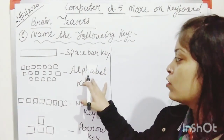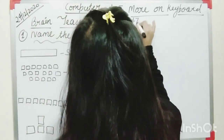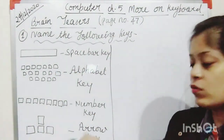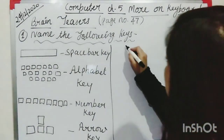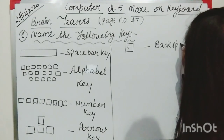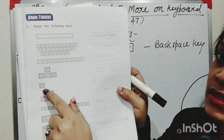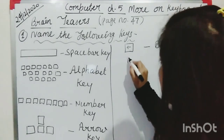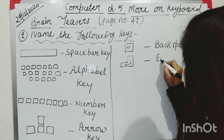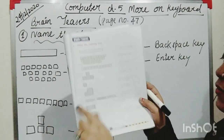So on page number 47: first is Space Bar key, second is Alphabet key, third is Number key, fourth is Arrow key. Fifth one is Backspace key. Next key — sixth — is Enter key. Seventh is Function key.